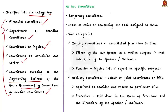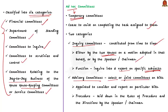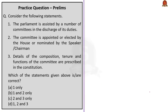Ad-Hoc Committees are temporary and cease to exist on completing the task assigned to them. They are divided into two categories: Inquiry Committees and Advisory Committees. Inquiry Committees are constituted from time to time either by the two houses on a motion adopted by the house or by the Speaker or Chairman, and their function is to inquire and report on specific subjects. Advisory Committees include select or joint committees on bills, appointed to consider and report on particular bills. The procedure to be followed by Advisory Committees is laid down by the Rules of Procedures and Directions by the Speaker or Chairman.